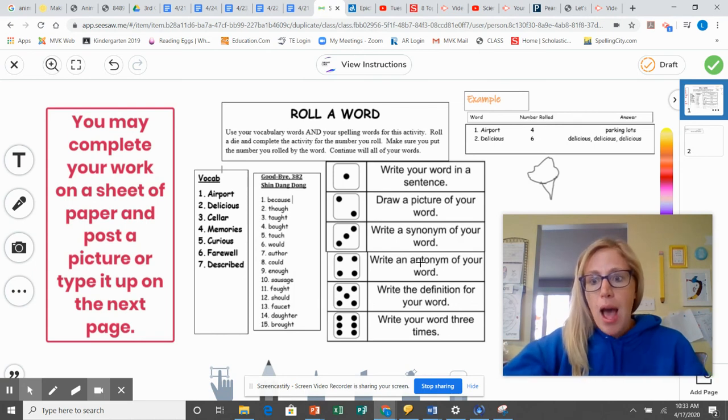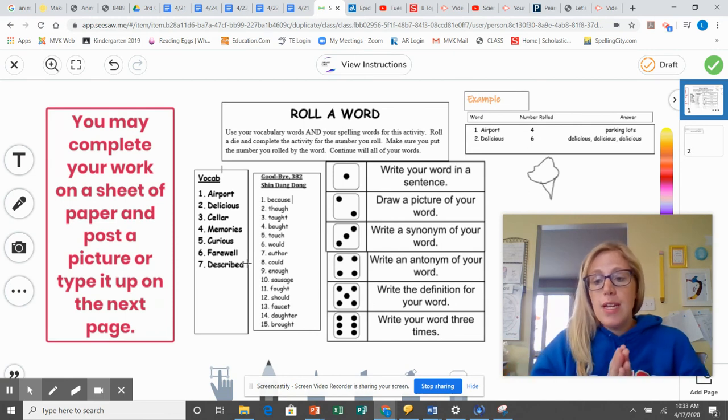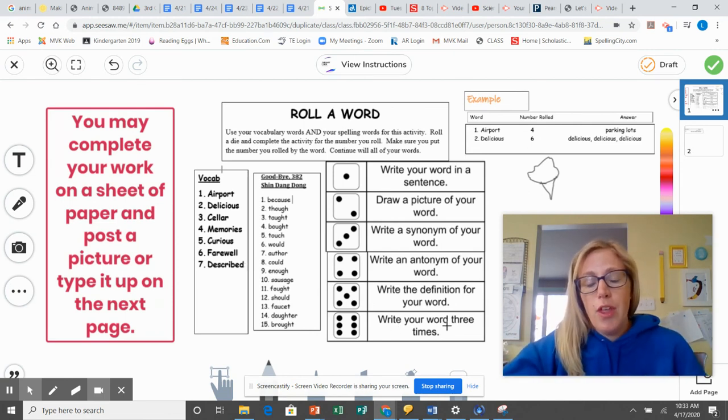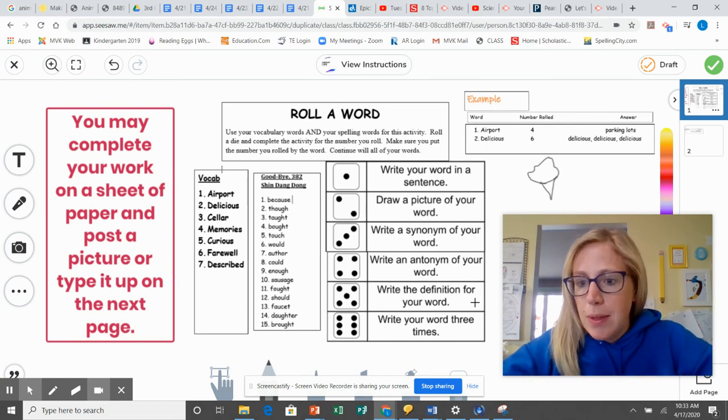And then antonym opposite, definition, go online, find the definition of that word. Or with these vocab words, you can look in the back of your reading textbook in that glossary. And then write your word three times. It's pretty self-explanatory.